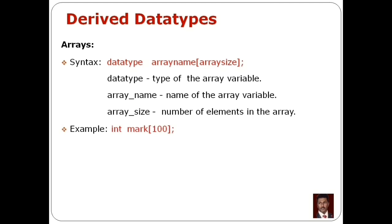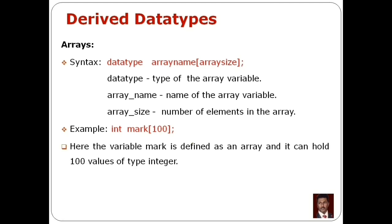Let's look at an example: int mark[100]. The data type is int, so this is an integer array. The array name is mark. The size in the square bracket is 100. So mark is an array of integer type that can store 100 values.